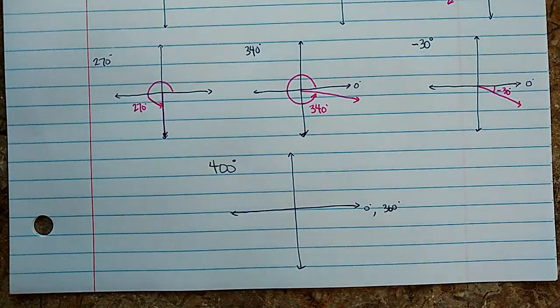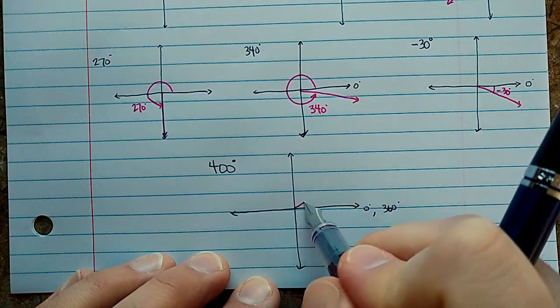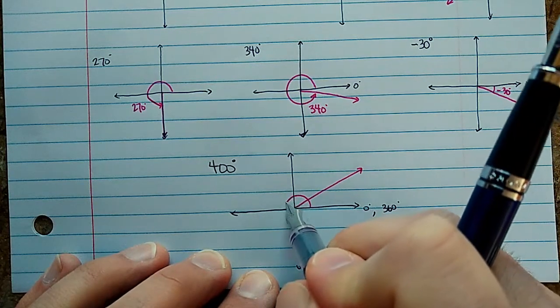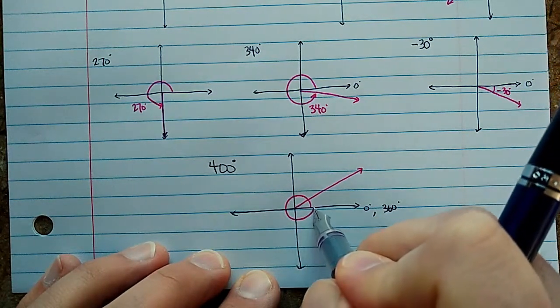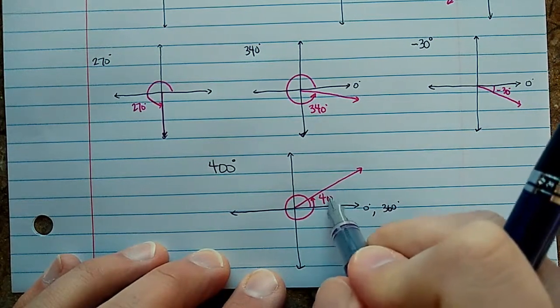400 is an additional 40 degrees past that. So it's kind of like this. Just go all the way around here and I'll make it like a little spiral so you can see it. And that would be 400 degrees.